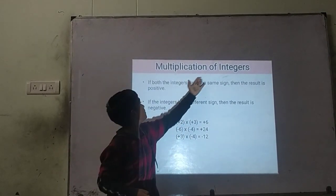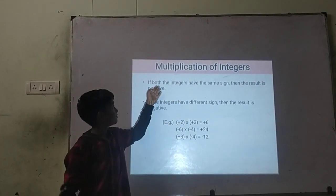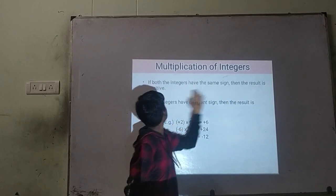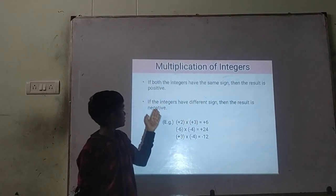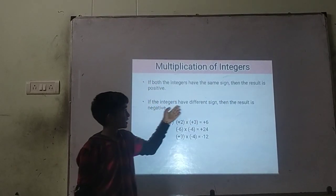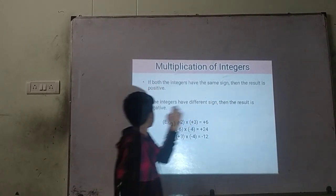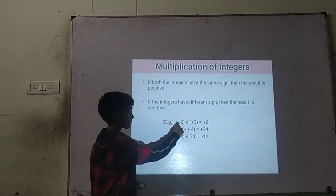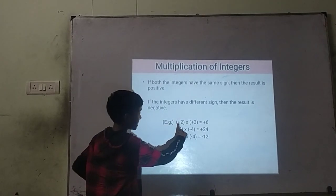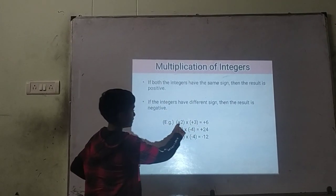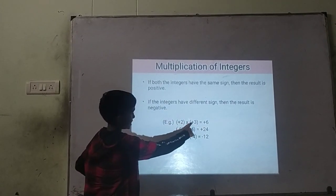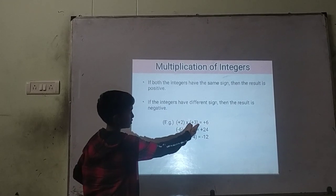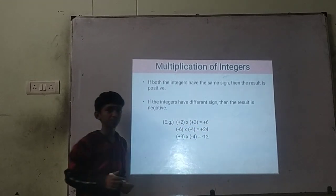Multiplication of integers. If both integers have the same sign, then the result is positive. If the integers have a different sign, then the result is negative. For example, plus 2 into plus 3: positive times positive is positive. So 2 into 3 is equal to 6, and the result is plus 6.